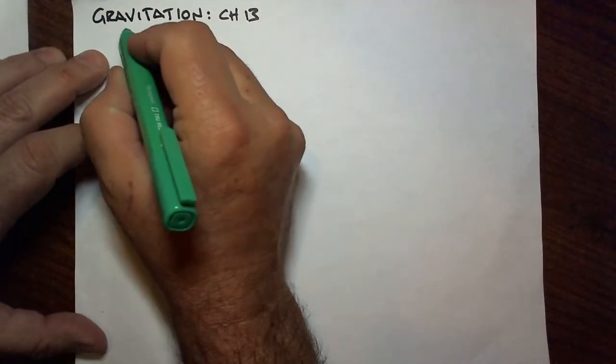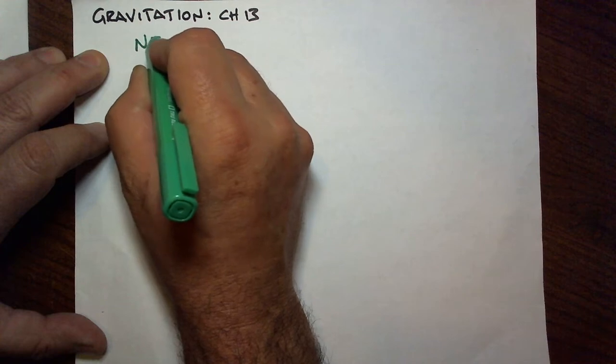Any discussion of gravitation obviously pretty much starts with Isaac Newton. And he's the one that finally figured out the universal law of gravitation.